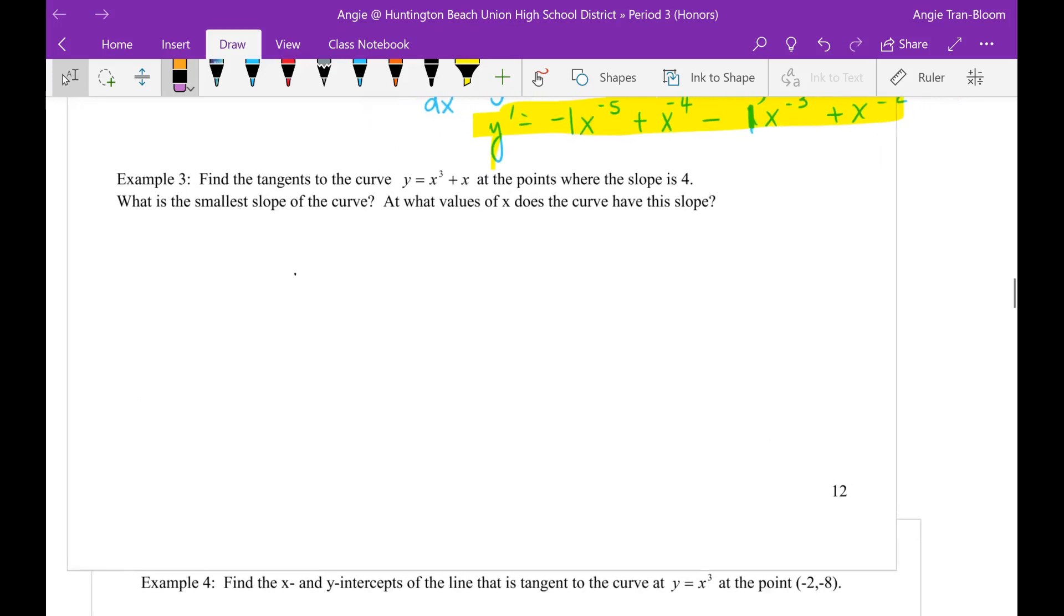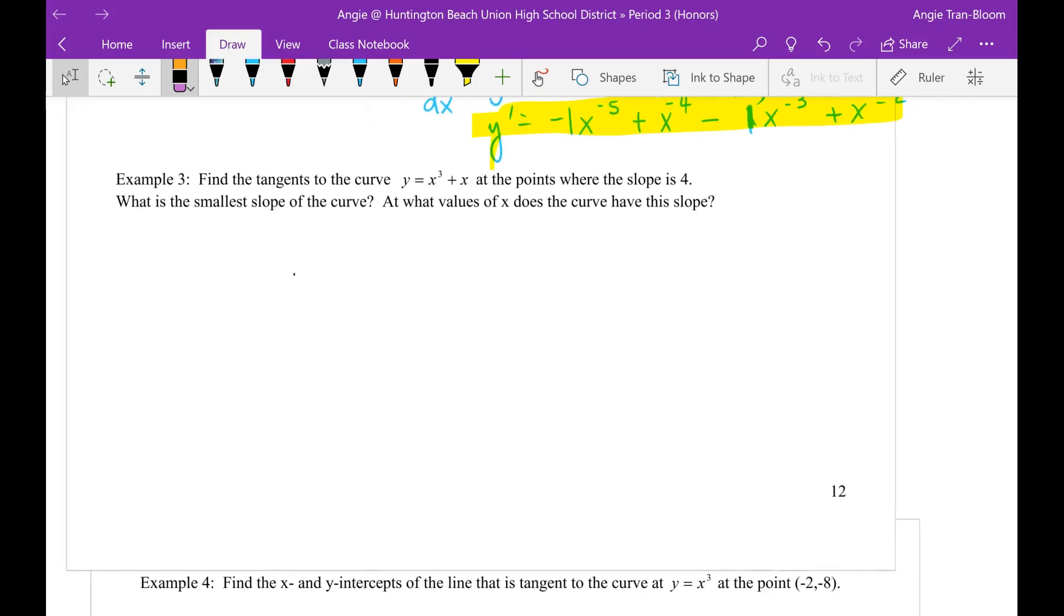Hi guys, this is the recording for example 3. Find the tangents to the curve y equals x to the third plus 1 at the points where the slope is 4. What is the smallest slope of the curve? And what values of x does this curve have this slope?